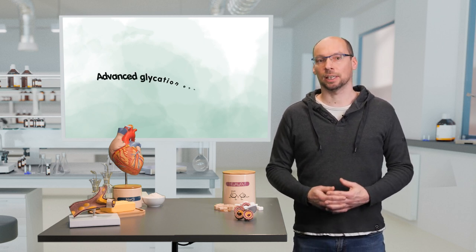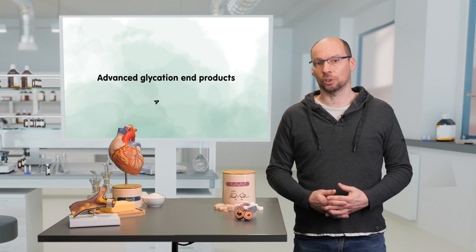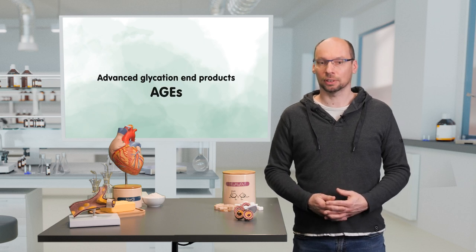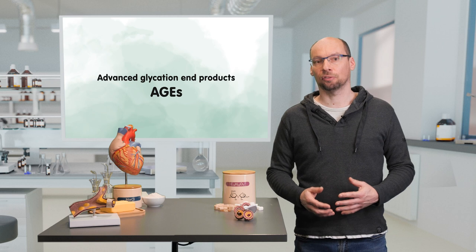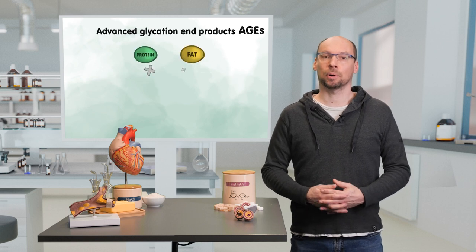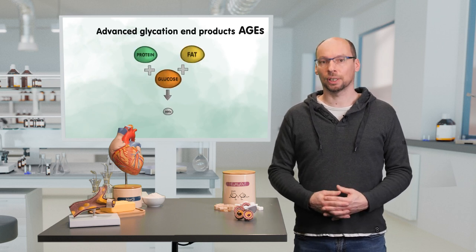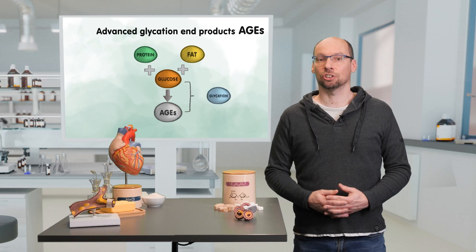Another important risk factor for atherosclerosis, which is not so well known, are the so-called advanced glycation end products, or short, AGEs. These AGEs are harmful compounds that are formed when proteins and fats combine with sugar. This process is called glycation.